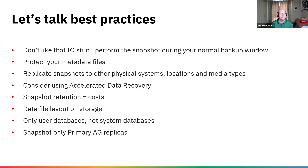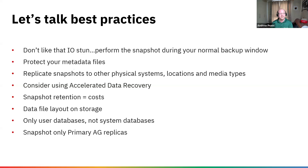Snapshot only primary AG replicas — this applies to both crash and application consistent snapshots. You can't pause I/O on a secondary anyway for application consistent, but for crash consistent as well: the way writes are written on a secondary are different to a primary. Writes can go to the log and then into the redo queue, meaning the data file and transaction log can be out of sync. If you snapshot at that point and try to bring the database up, it can fail immediately or come up marked as suspect. So only snapshot on primary AG replicas.